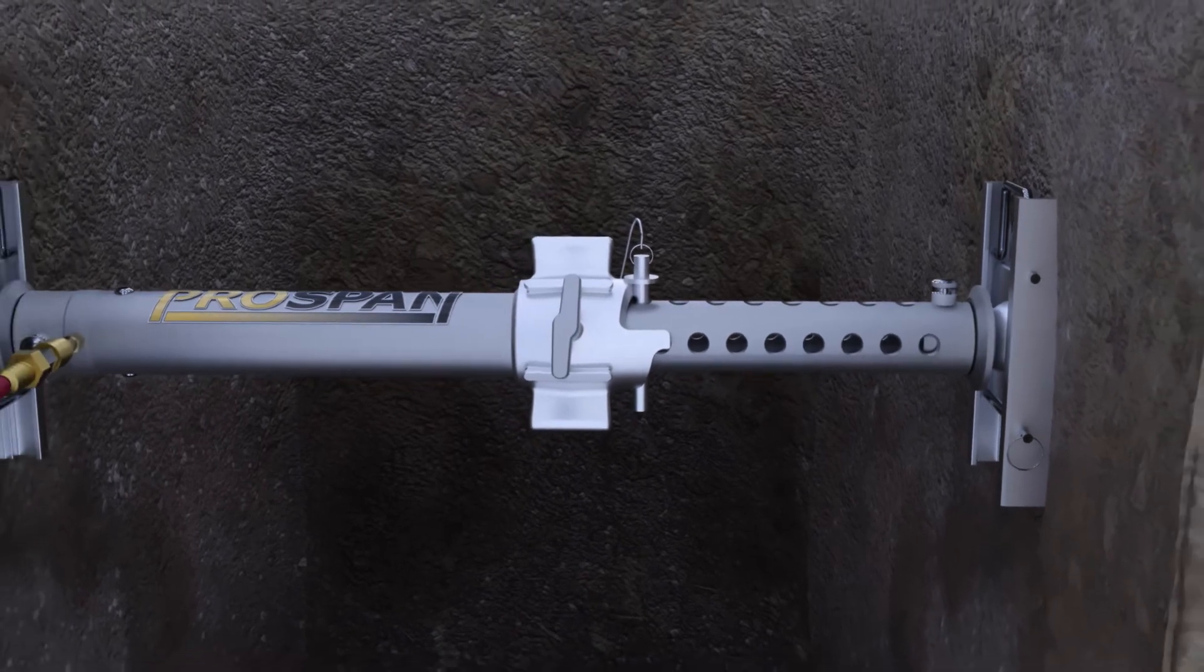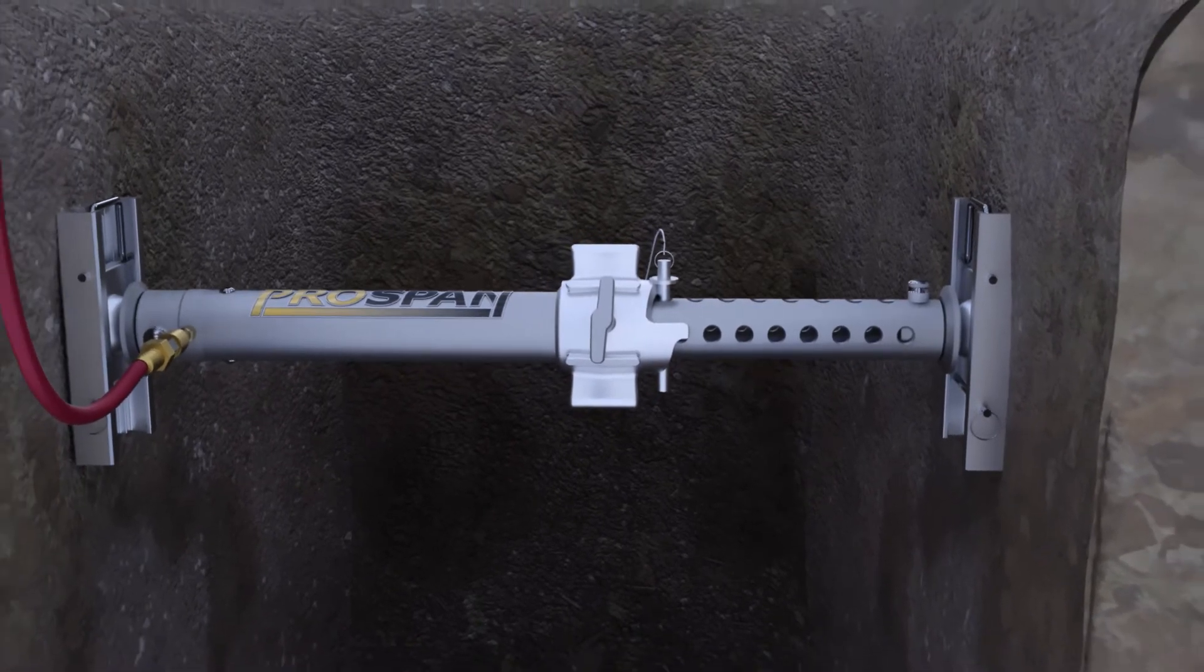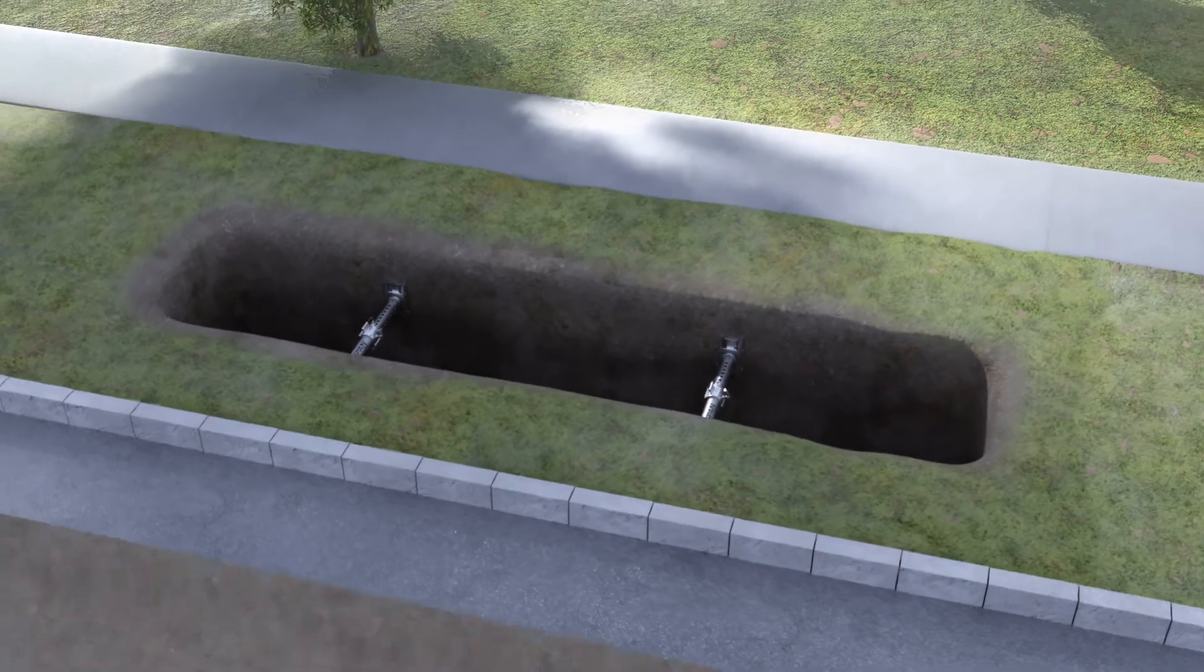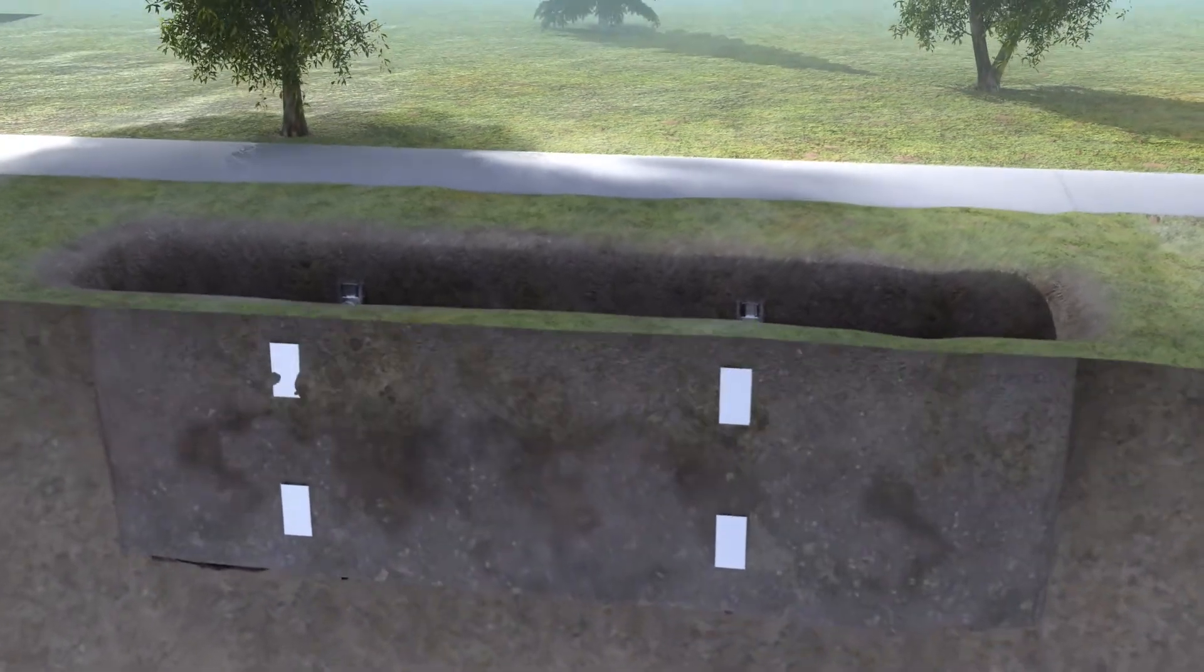Once this has been accomplished, the air is vented from the ProSpan at the controller. The result is a fixed mechanical shoring device, no longer requiring an internal pressure to do its job.